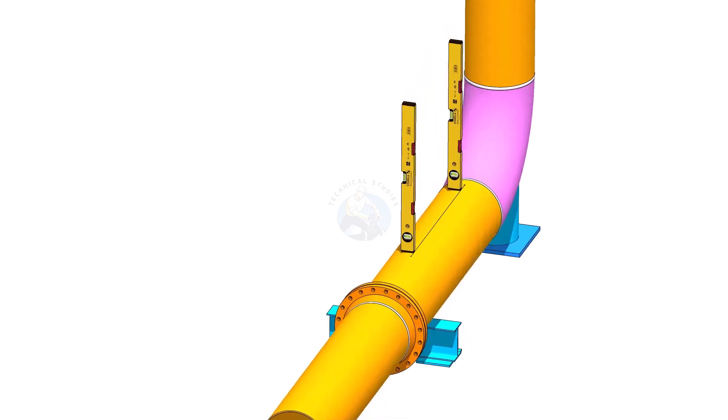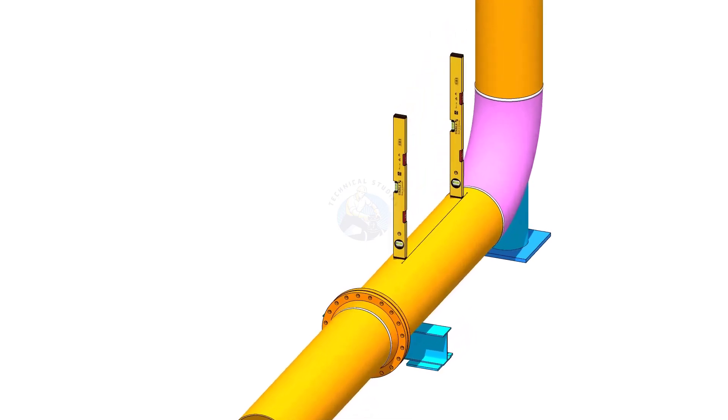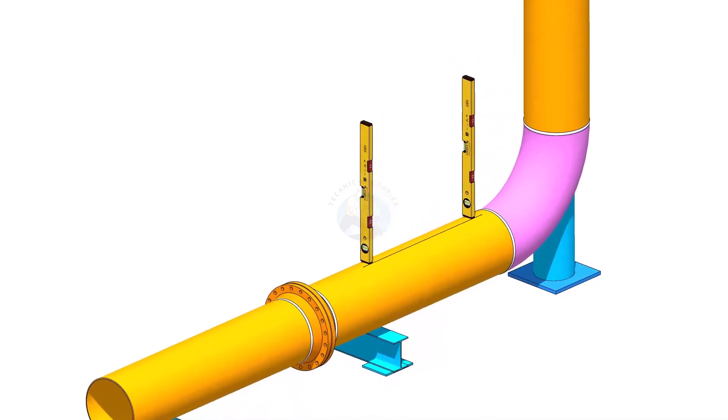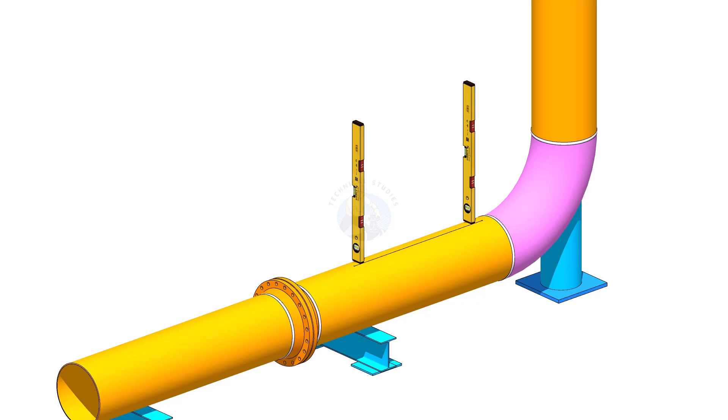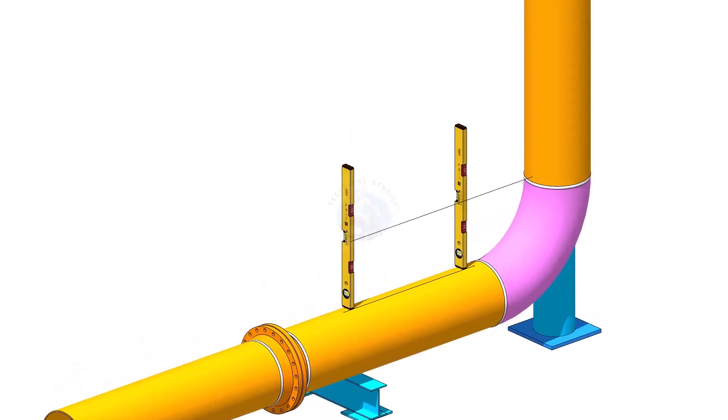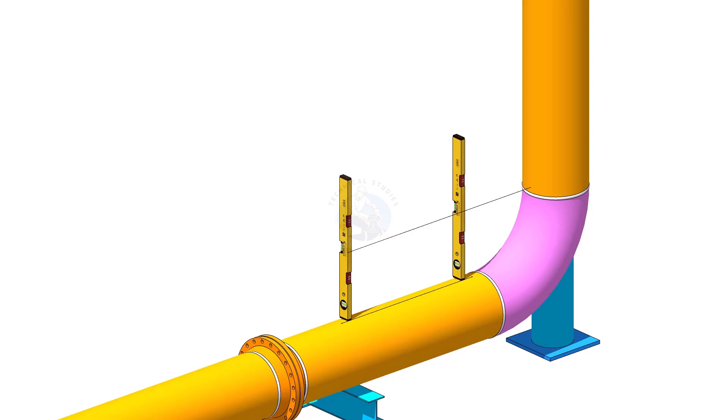Hold two level bottles on the line vertically as shown. Transfer the levelness on the vertical pipe on two locations as shown. You can use line thread or a straight edge.